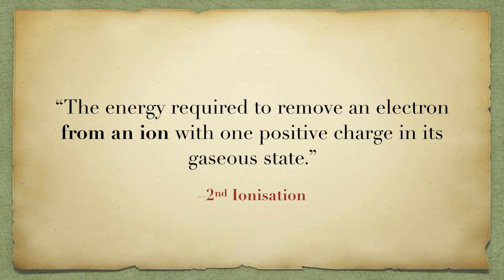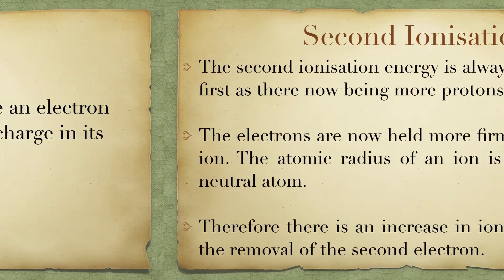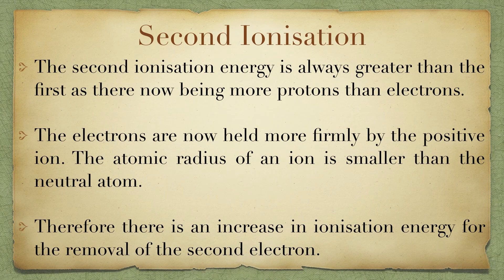The second ionization energy is defined as the energy required to remove an electron from an ion with one positive charge in its gaseous state. The second ionization energy is always greater than the first, as there are now more protons than electrons, meaning the electrons are held more firmly by the positive ion. The atomic radius of an ion is smaller than the neutral atom, therefore there is an increase in ionization energy for the removal of the second electron.